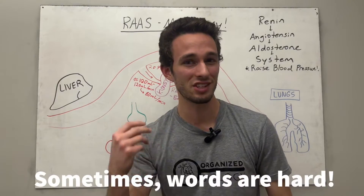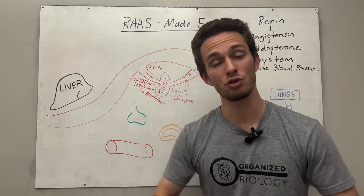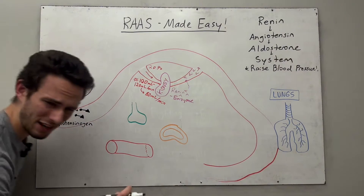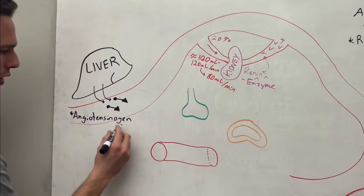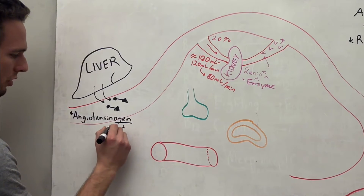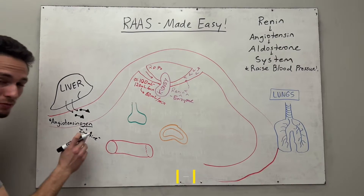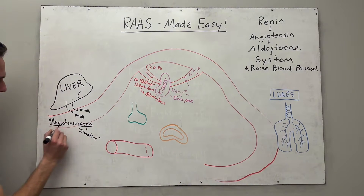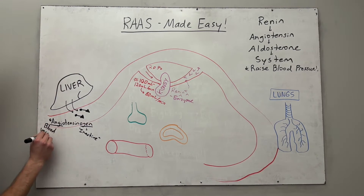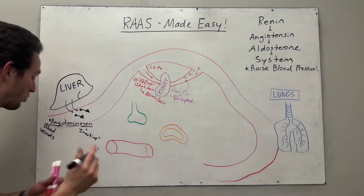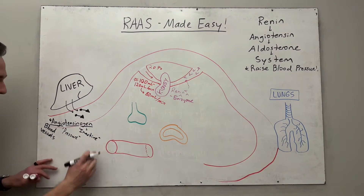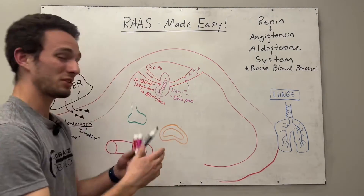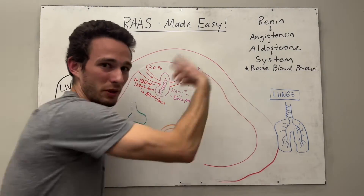We are going to act on a specific substance from the liver, and this substance is going to be called angiotensinogen. Now break down this word because words matter. 'Ogen' usually refers to some sort of inactive form of something, and most of these molecules are produced by the liver. 'Angio' refers to blood vessel, and 'tensin' literally sounds like tension or pressure. So it's an inactive molecule that deals with pressure in blood vessels — thus blood pressure — which makes sense because the goal is to raise blood pressure.